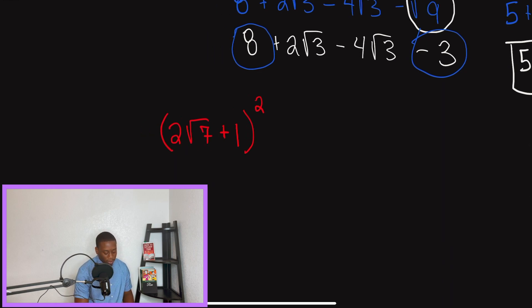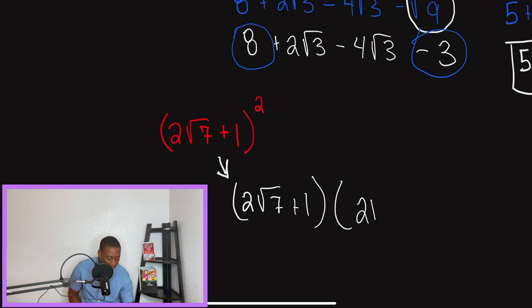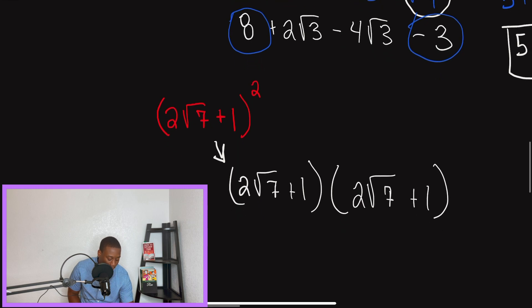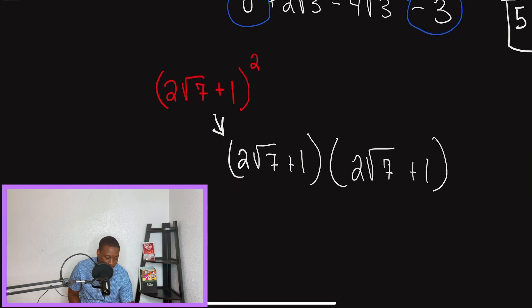So our last problem for today, I want to focus on this binomial. And the reason why is because students sometimes forget to expand it. So don't think that you just square and get 4 radical 49 plus 1 and then you simplify. No, that is not it in this problem. What this exponent is telling us is that we're going to take this binomial and we're going to write it twice, then multiply. So this is what the problem should look like before we actually start multiplying.